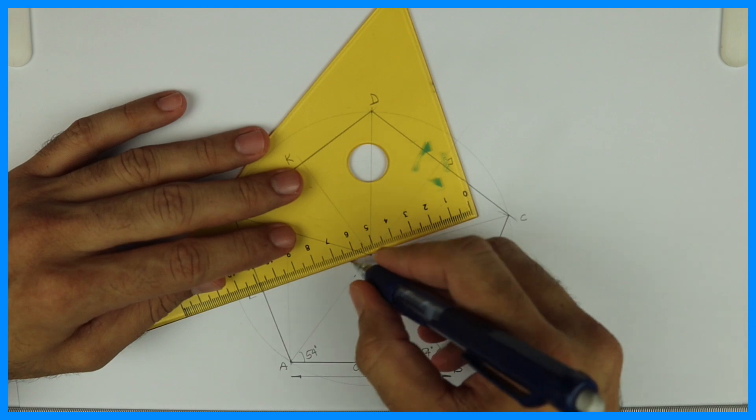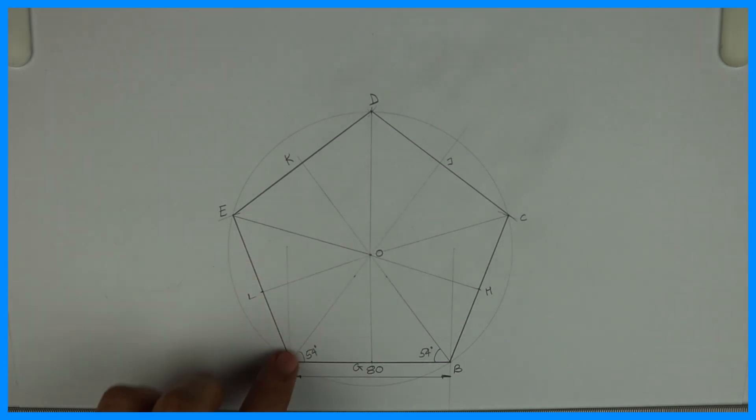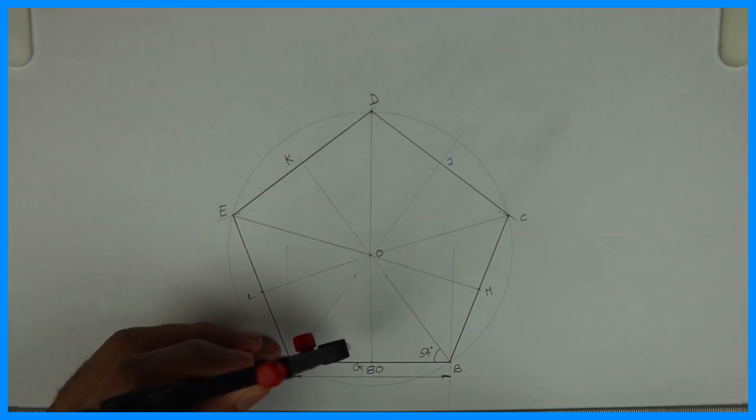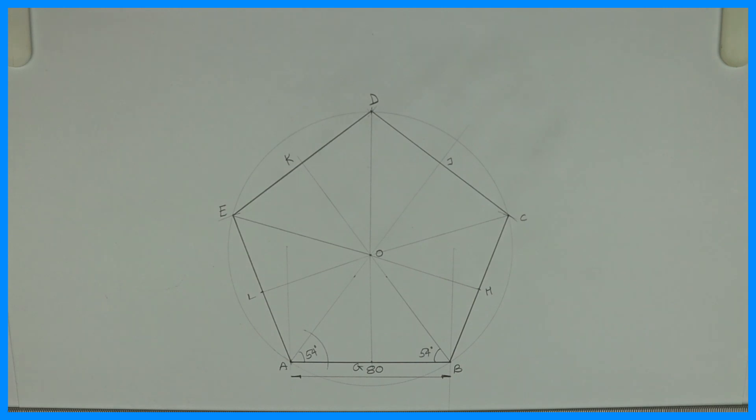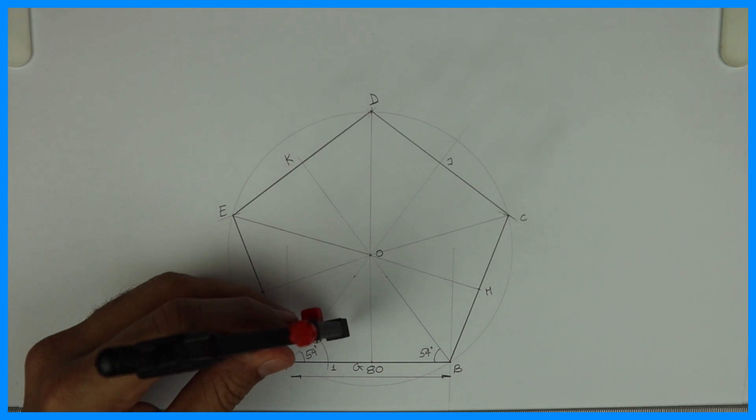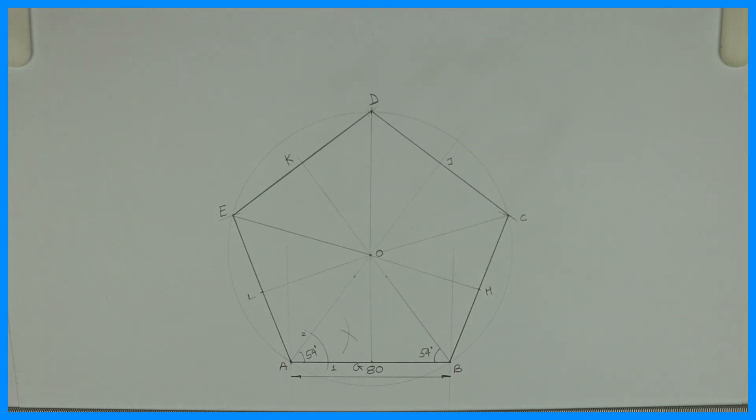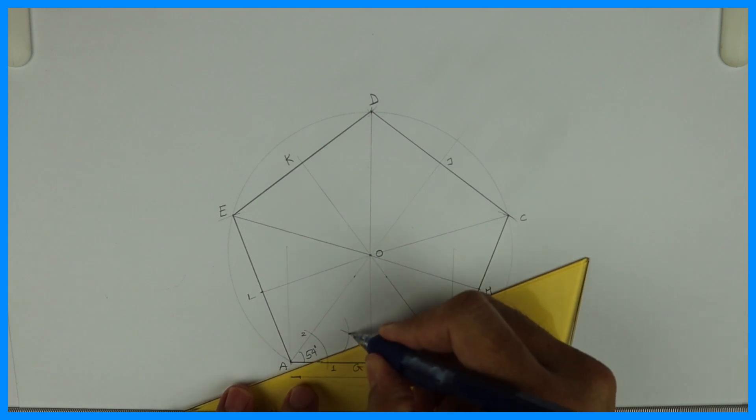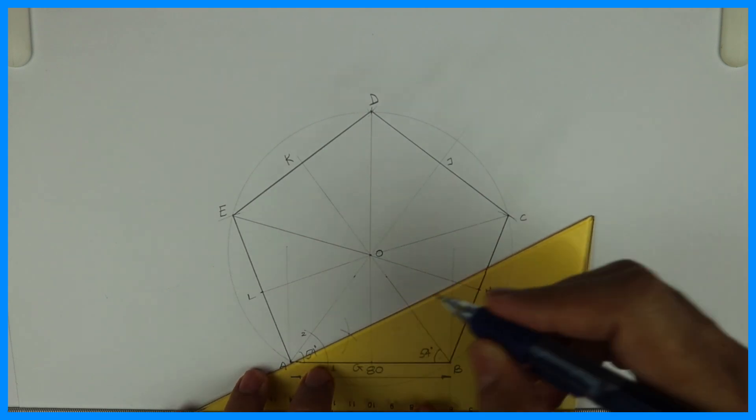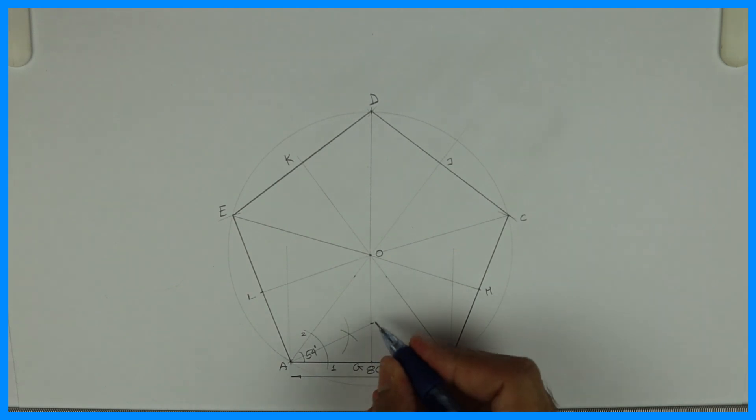We got five triangles and five bisectors. Now we need to bisect angle OAB. If you want to cross check with the protractor, it should be 27 degrees. This is point P.